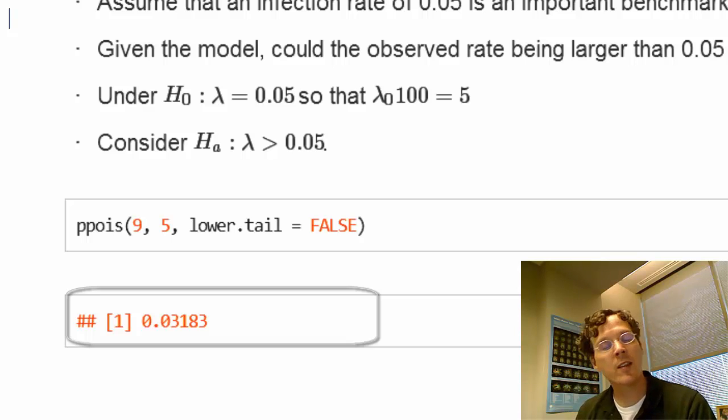It turns out that that's a relatively low probability. It's unlikely for us to have seen as many as 10 infections for 100 person days at risk, only 3% chance of that occurring if, in fact, the real infection rate was 5 for 100 person days at risk. So this hospital perhaps should execute those quality control procedures.